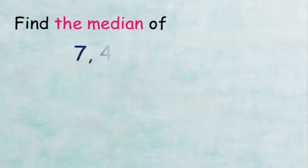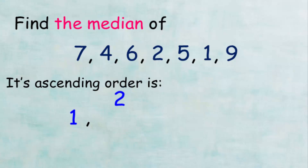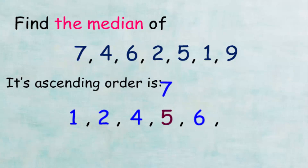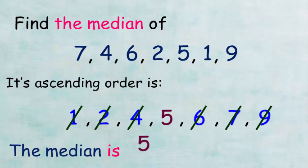Let's take another example. In this example we want to find the median of values 7, 4, 6, 2, 5, 1, and 9. We arrange the values in ascending order, and by removing the values 1 and 9, 2 and 7, and 4 and 6, we find that the value left in the middle is 5. Therefore, the median of these values is 5.